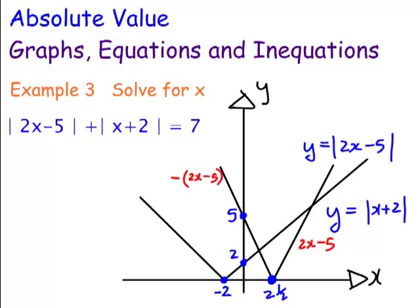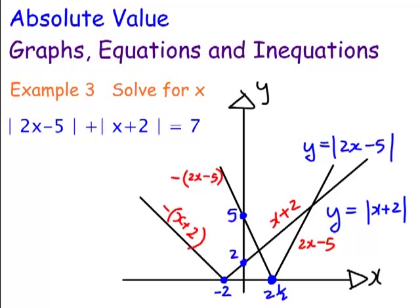How about x plus 2? Well, this is the positive arm over here, and the negative arm is the reflected arm — it's the negative of x plus 2, which reflects it up. So the negative arm is minus of x plus 2.